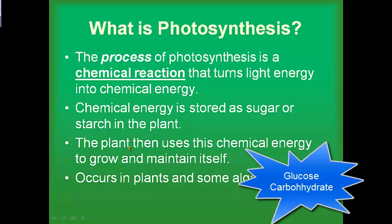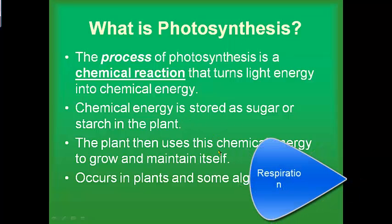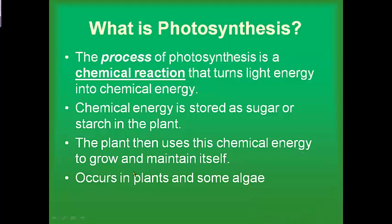When the plant needs more energy, it will take and burn those sugars through a process called respiration. That process releases the energy from the sugar and starch so the plant can use it. Finally, photosynthesis happens mostly in plants and certain types of algae — that's where it occurs.